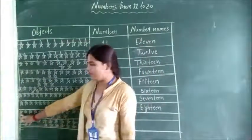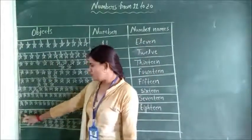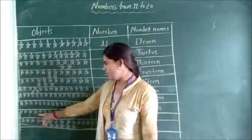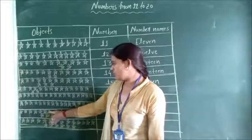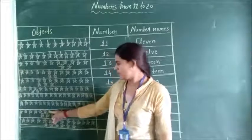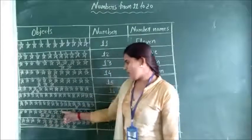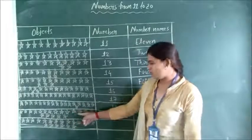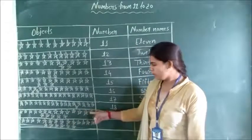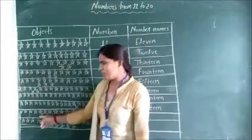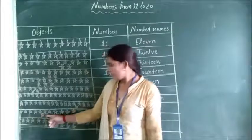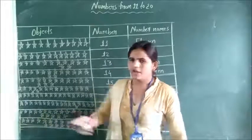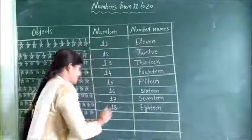Next. Count: 1, 2, 3, 4, 5, 6, 7, 8, 9, 10, 11, 12, 13, 14, 15, 16, 17, 18, 19. Nineteen. Next.